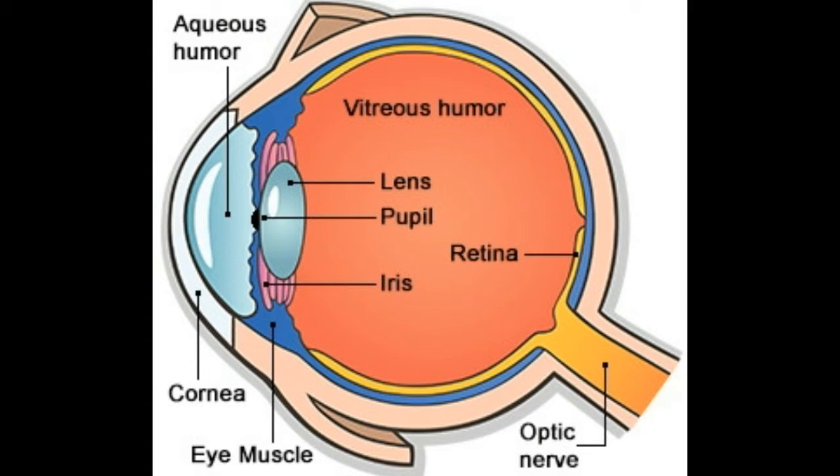Cornea — the cornea is a transparent tissue at the front of the eye through which light coming from an object enters the eye. It also helps in focusing the light on the retina. Aqueous humor — it is a clear, transparent fluid that fills the space between the cornea and the lens. It also supplies nutrients and oxygen to these parts.